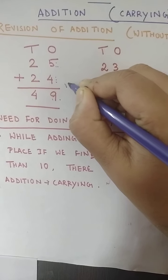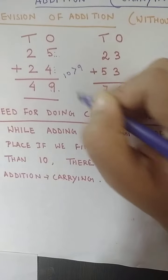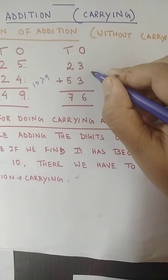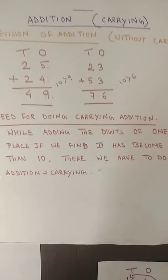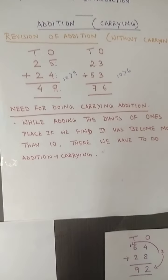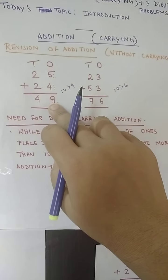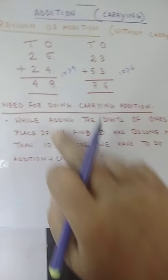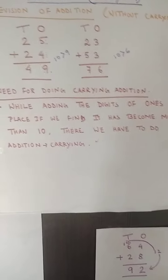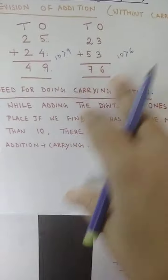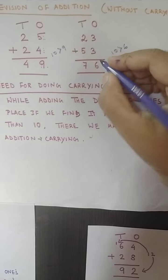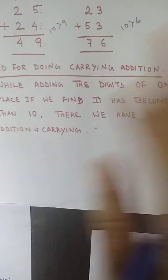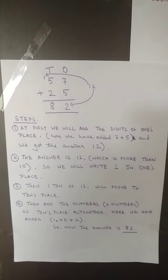For example, 4 plus 5 gives 9, and 9 is obviously less than 10. Here also, 3 plus 3 is 6, which is also less than 10. If you check your copy, you will see that every time you do this addition, every answer is below 10. Now, if the answer comes to more than 10, what will happen? There lies the need for carrying addition — whenever adding the ones place digits gives more than 10, we have to do addition carrying.